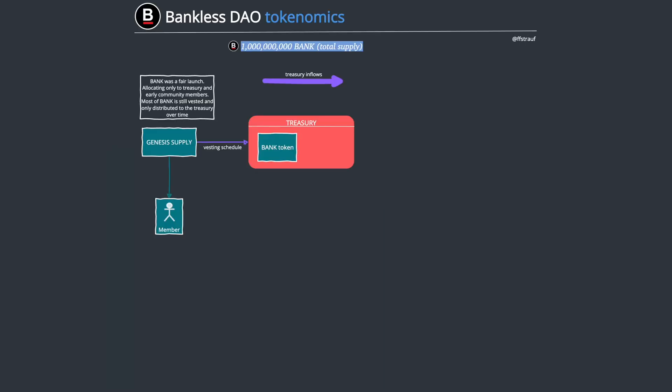I know I haven't done a walkthrough for a while, that's because I haven't done a tokenomics article for a while. But it looks like the Bankless DAO tokenomics article is going to be released soon, so I thought I'd record a video of the diagram and walk you through the tokenomics of Bankless DAO.